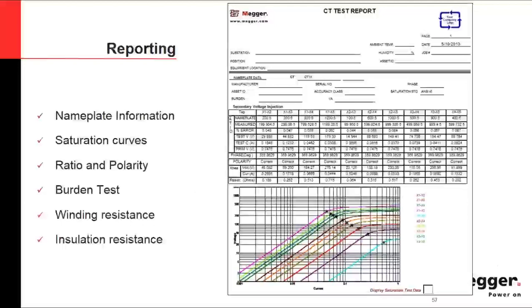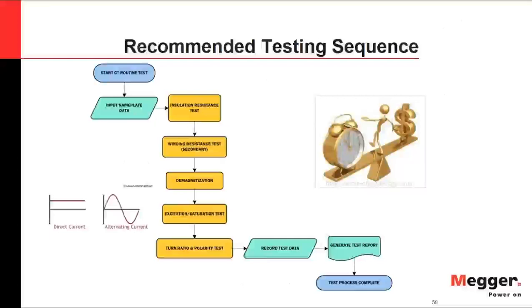After completing the tests, reporting is critical. Make sure your final report includes complete nameplate information. When you fill in nameplate details — accuracy class, and whether this is an ANSI or IEC standard CT — the test set will configure itself to test the unit according to that specific standard. Your report should include: saturation curves, ratio and burden test values (both measured and estimated at various percentages), winding resistance, and insulation resistance.